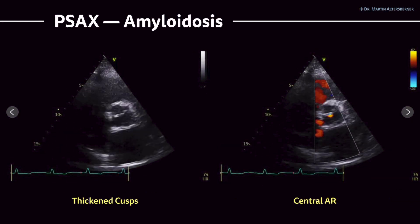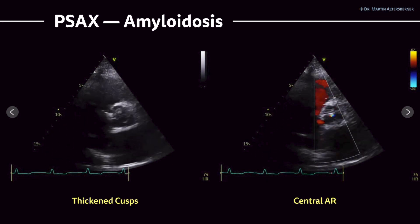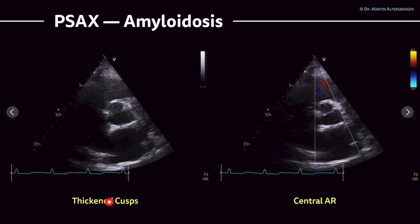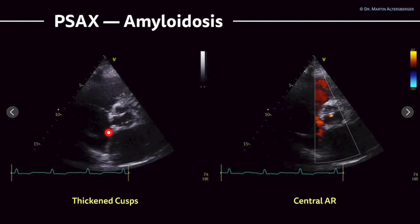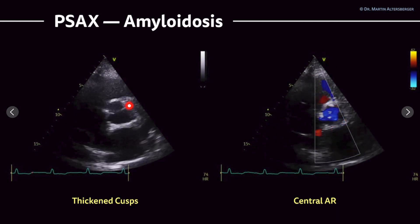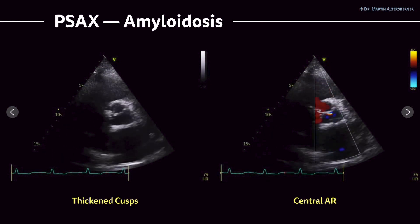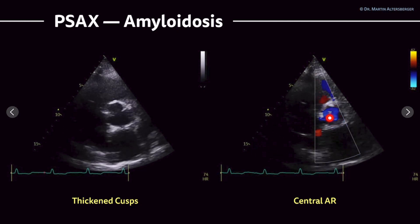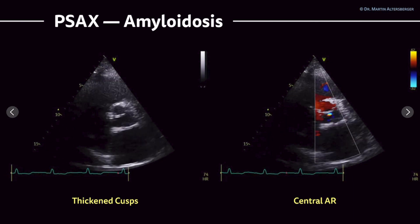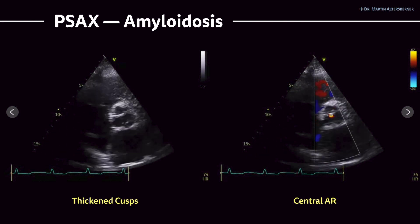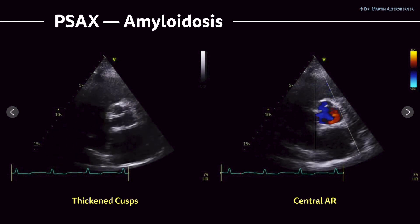In this case, we have amyloid heart disease — a patient previously shown with tricuspid regurgitation. The aortic valve is in the center of the image, and we can see that the cusps are thickened: the right coronary cusp, the left coronary cusp, and the non-coronary cusp. When we add color Doppler, we can see that there is aortic regurgitation present — a small, central AR. With color Doppler, we can localize and partially quantify the AR. If it filled the entire LVOT, it would likely be severe; in this case, it is a rather small flare at the center of the aortic valve.